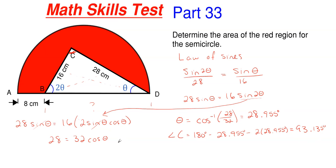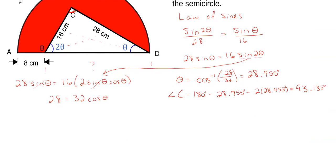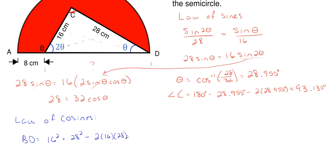Why did I target angle C? Because I can then use the law of cosines to find BD, since I know two sides of the triangle and the angle opposite my unknown side. Using the law of cosines: BD² = 16² + 28² − 2(16)(28)cos(93.135°). Taking the square root of all that, BD comes out to be 33 centimeters — a nice round number.